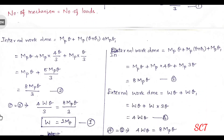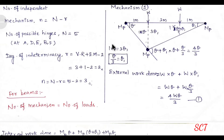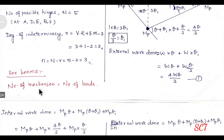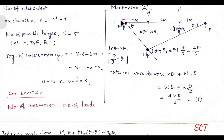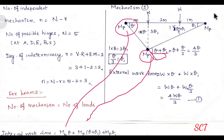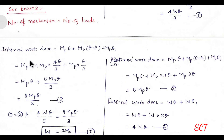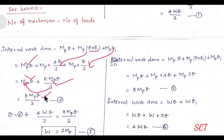Next, calculate internal work done: MP into theta. Then MP into (theta plus theta1) — that is MP into 4 theta by 3. Then MP into theta1 which is theta by 3. Substituting: 4 plus 5 is — totalling 8 MP theta divided by 3. So this is the second equation.